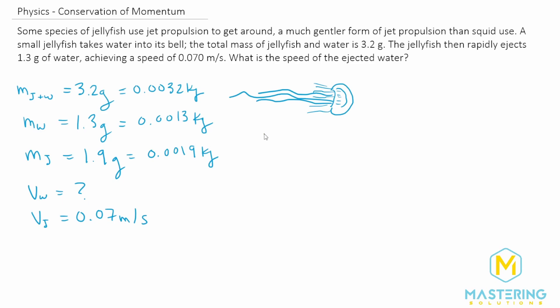So the momentum of the system is equal to the momentum of the jellyfish plus the momentum of the water all equals 0 because of no outside forces. So if we subtract both sides by the momentum of the jellyfish, we get the momentum of the water is equal to the negative momentum of the jellyfish.